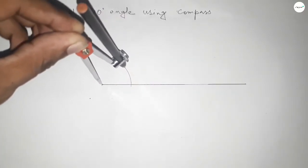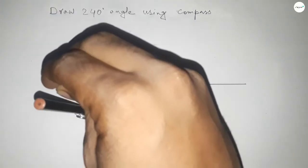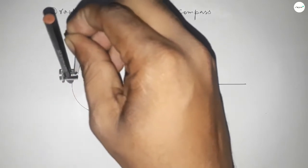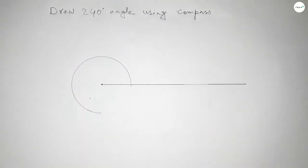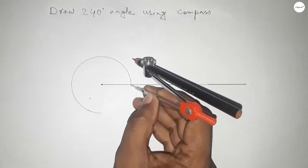Drawing an arc here by this way. Now putting the compass here and taking same length and cut here.